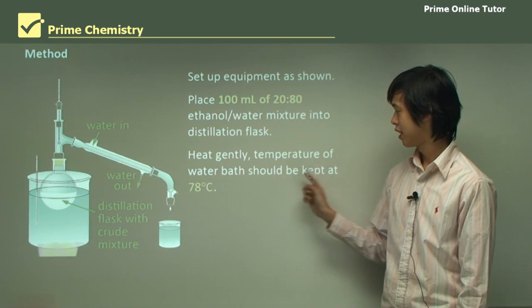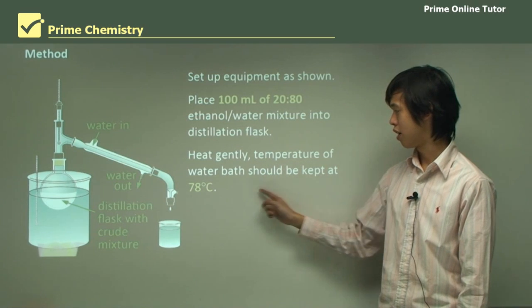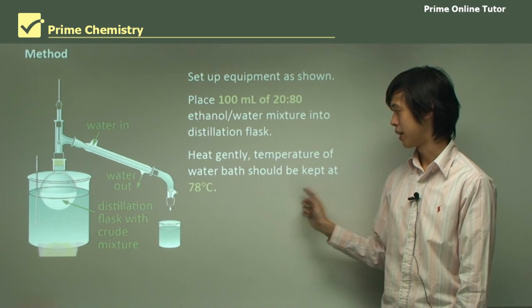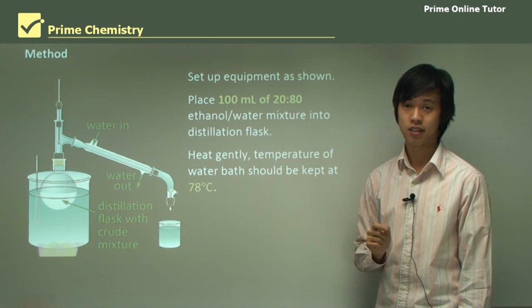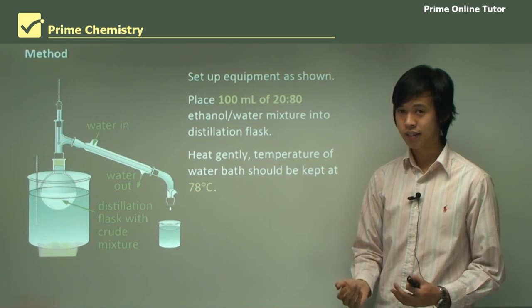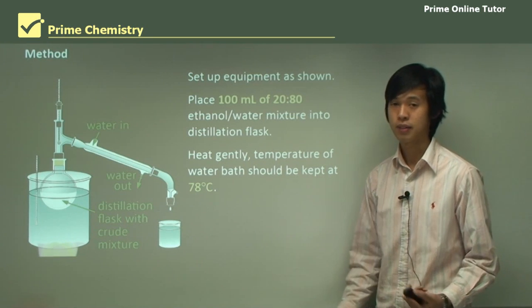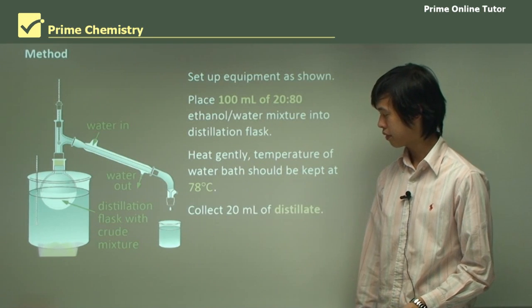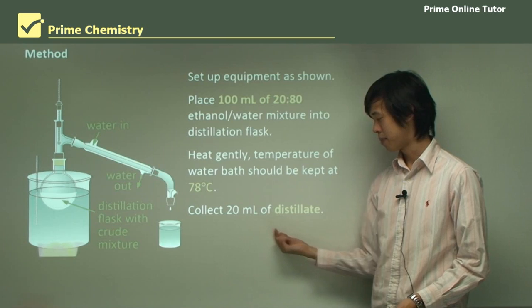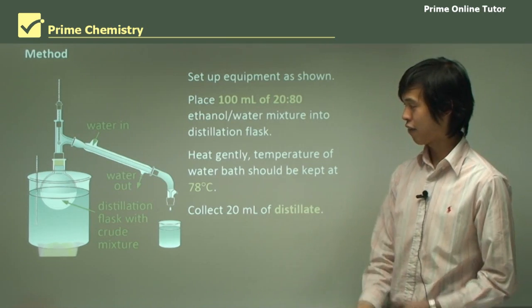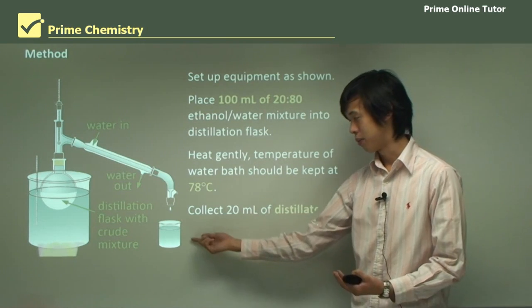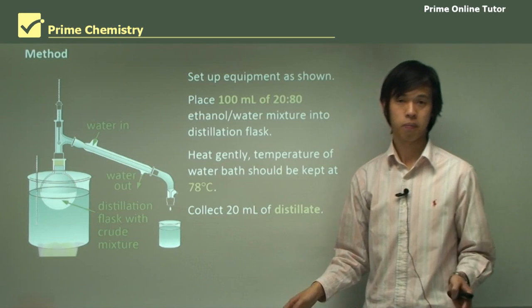We heat it gently to a temperature of, so the temperature of the water bath should be kept at 78 degrees Celsius. And we'll talk about why in the question segment, why we want to keep it at this particular temperature. And then we collect 20 ml of the distillate. So after we've condensed it and things like that, we'll get 20 ml here, then we stop.